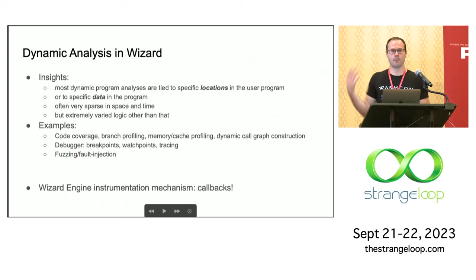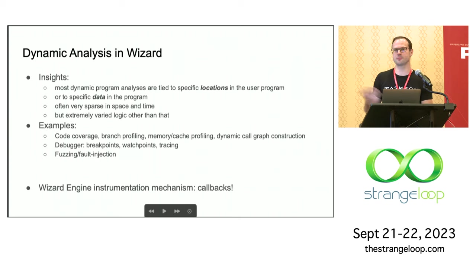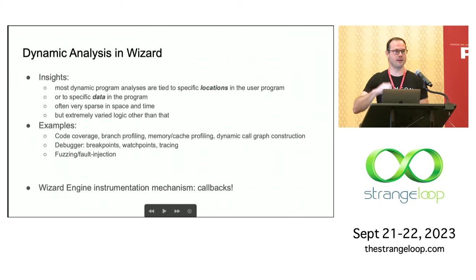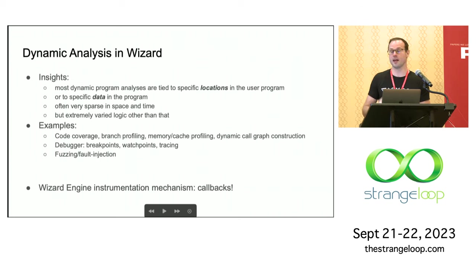For example: what if I want to see the parts of the program that have been executed versus not? That's called code coverage. Maybe I'm interested in which branches in the program are very unpredictable — profiling the branches, or a compiler optimization targeted towards branches. Or maybe I'm interested in the memory system, or I want to see what functions call what — construct a dynamic call graph. If you want to build a debugger, you want breakpoints — stop at a particular location and look at the program state. Or even better, stop when a particular memory location is accessed — watch points. And going beyond that, more advanced use cases like fuzzing a program or injecting a fault.